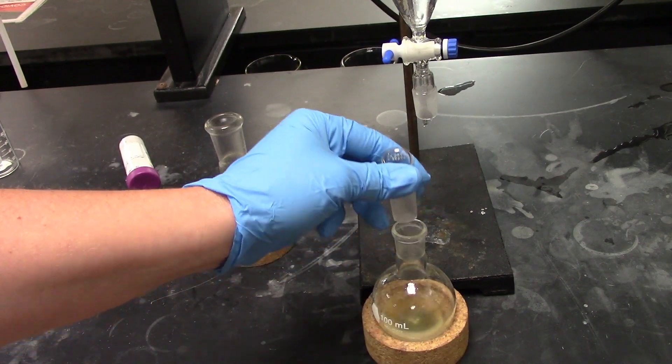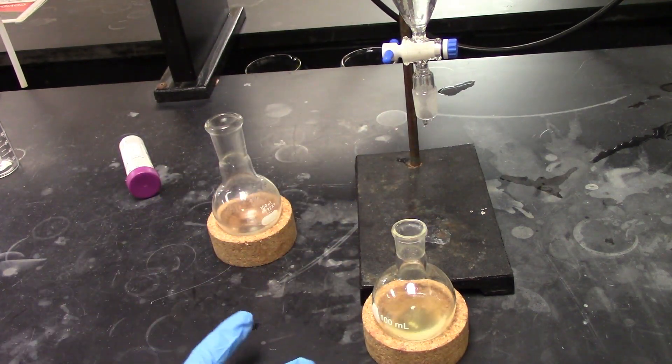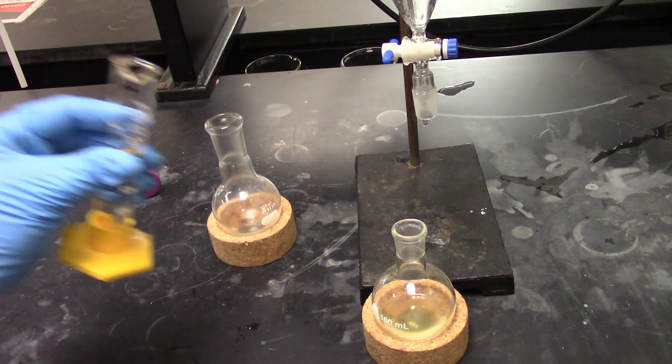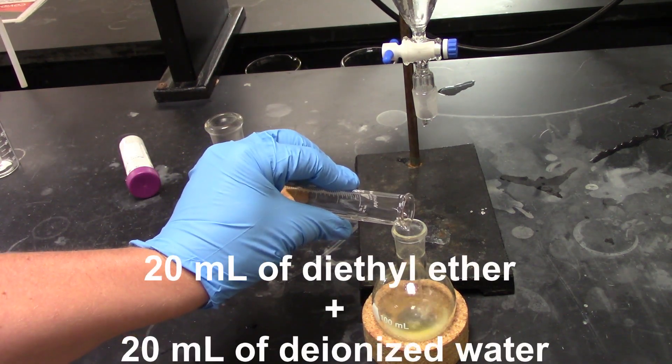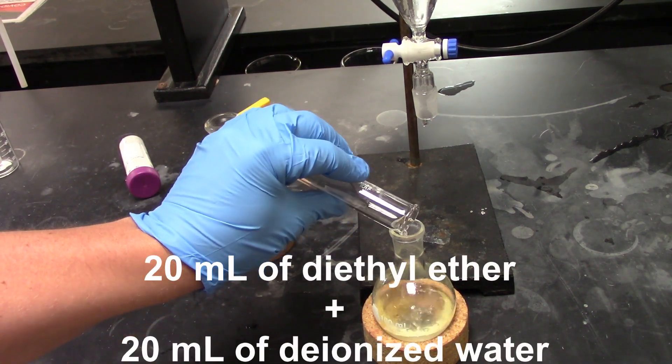So now we're ready to perform our extraction. First thing we're going to add is our diethyl ether, and this is going to help remove out the benzaldehyde as well as the benzyl alcohol.